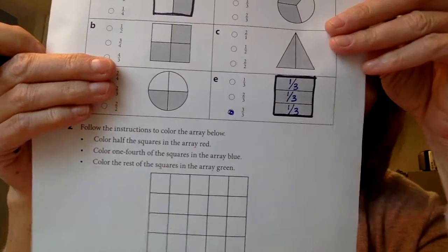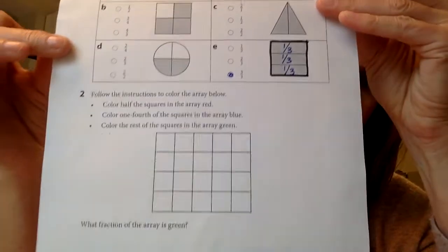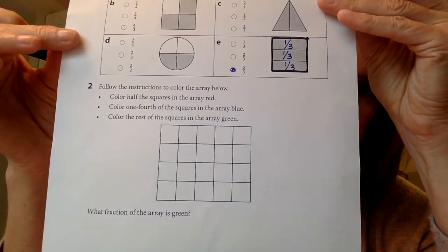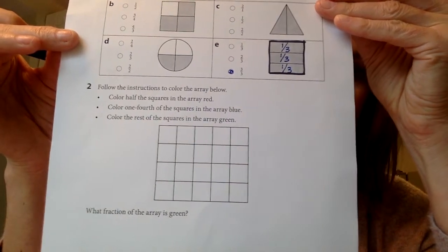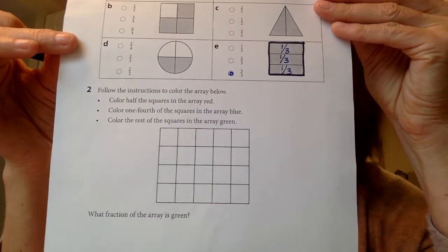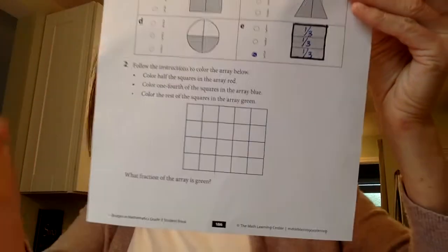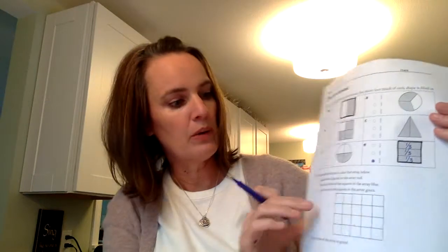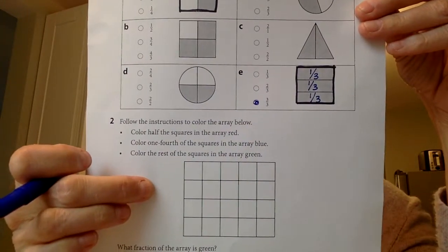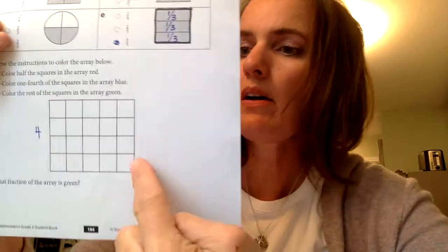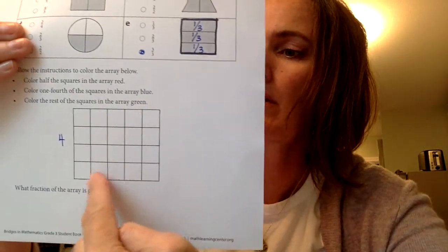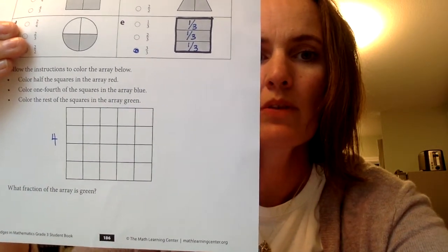Okay, let's move down to the bottom where it says follow the instructions to color the array below. Point to the array. Yup. There it is. Let's label the dimensions on the array. Can you help me? So what dimension would I put over on this side of the array? Trying to hold real still for you.